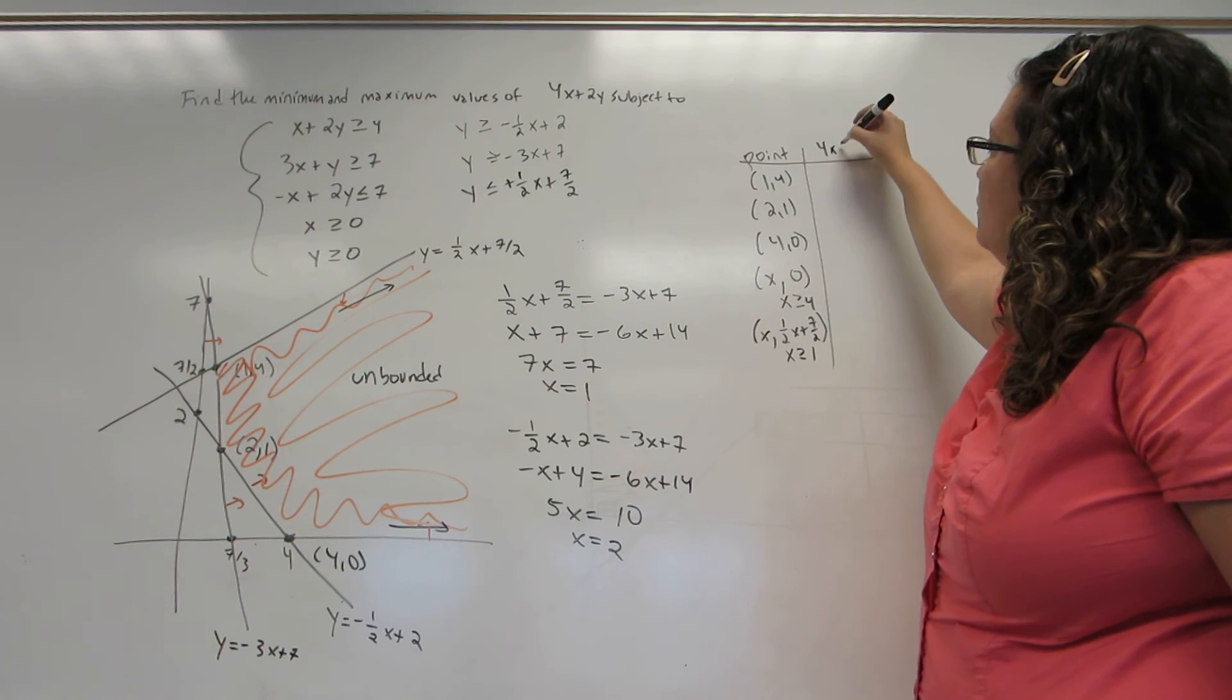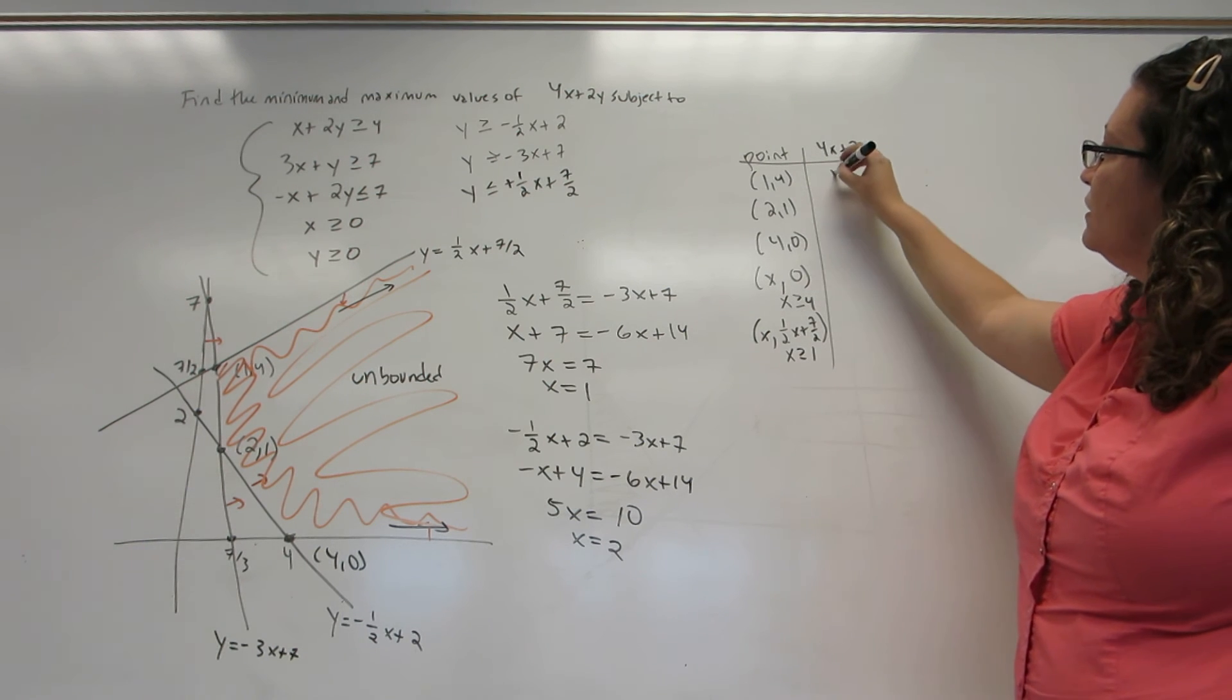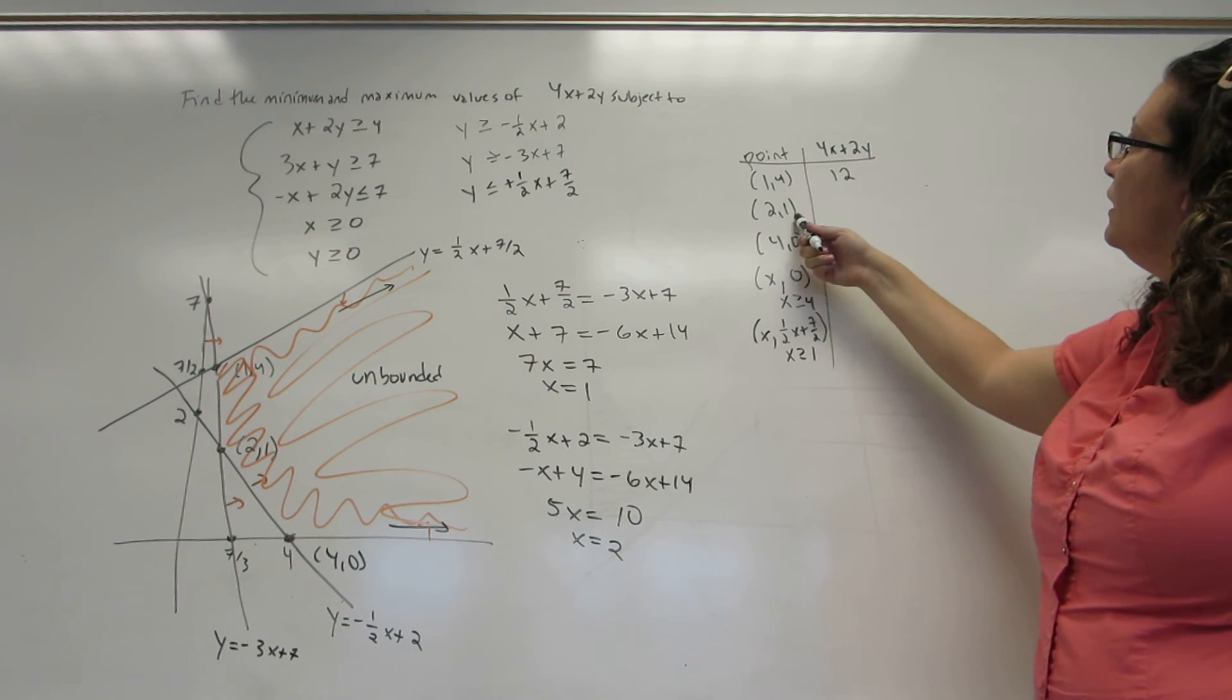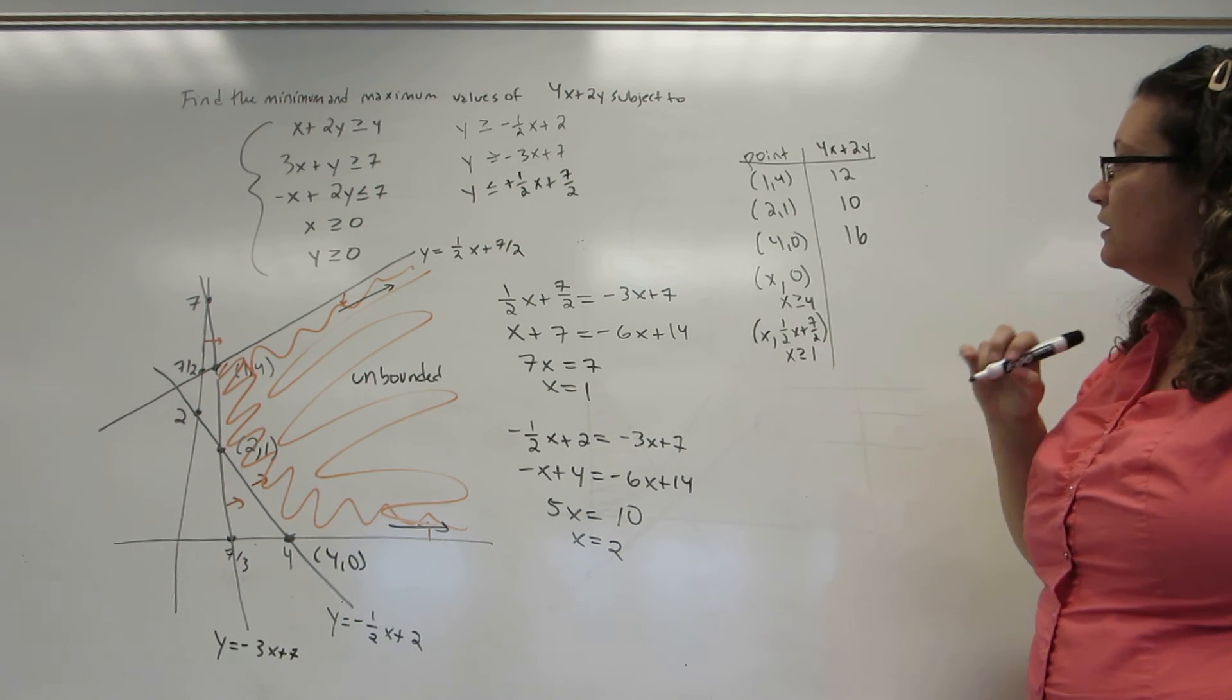Now we're going to evaluate each of these at our objective function. So I get 4 plus 8 is 12, 8 and 2 is 10, 16 and 0 is 16.